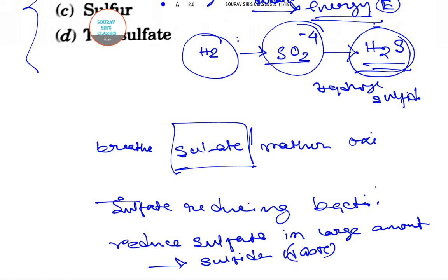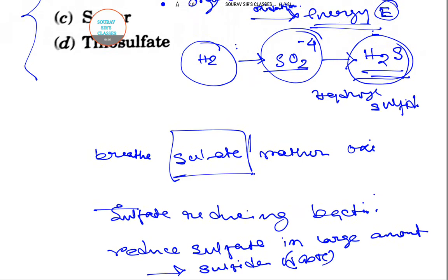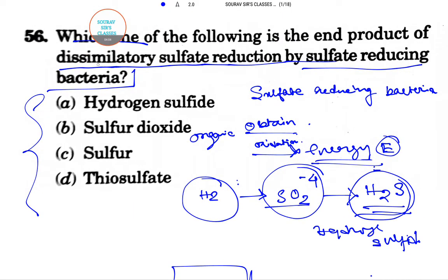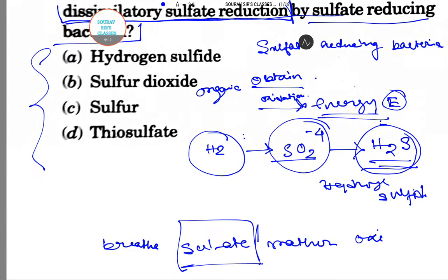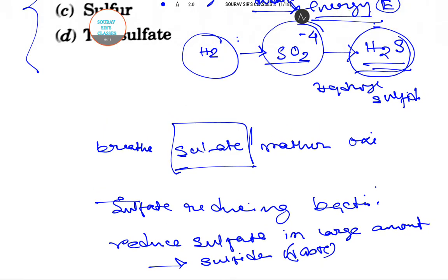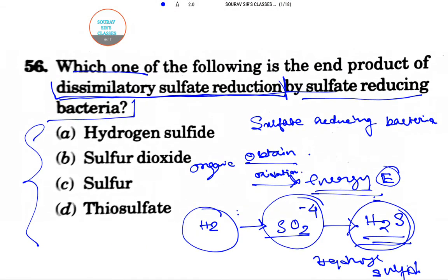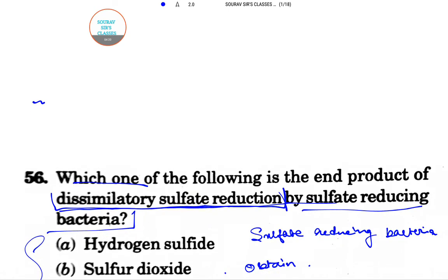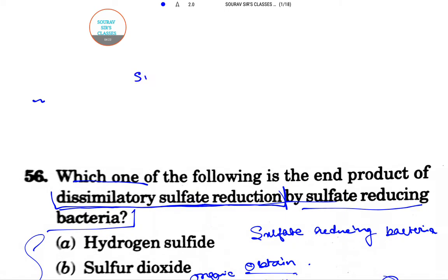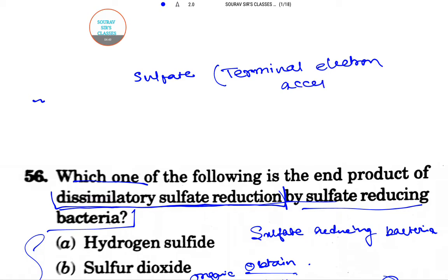This is known as dissimilatory sulfate reduction. In dissimilatory sulfate reduction, they use sulfate as their terminal electron acceptor of the electron transport chain — that is the ETC.